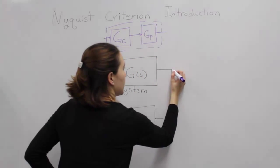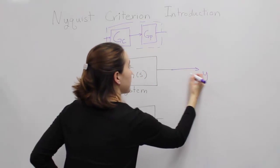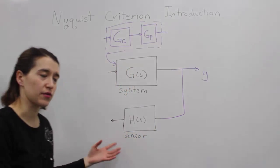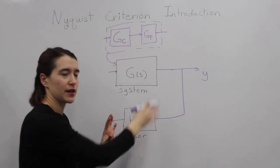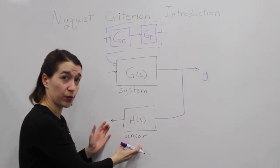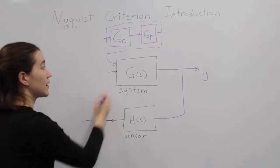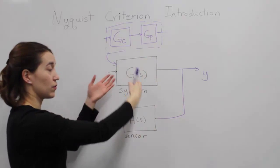So this would be output Y. We have some sort of feedback. If you have a sensor or some sort of transfer function that goes in the feedback loop, you can multiply that here. And then based on these characteristics of these two systems,